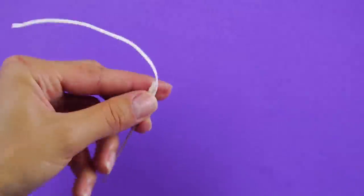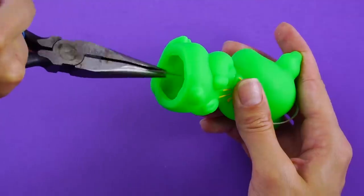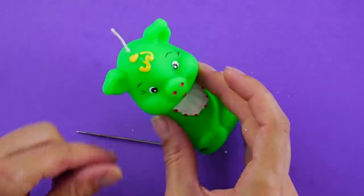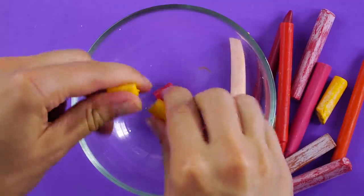Thread the wick through the eye of a large needle. Then pierce the needle through the top of your mold. Use a pair of pliers to pull the needle and wick all the way through.